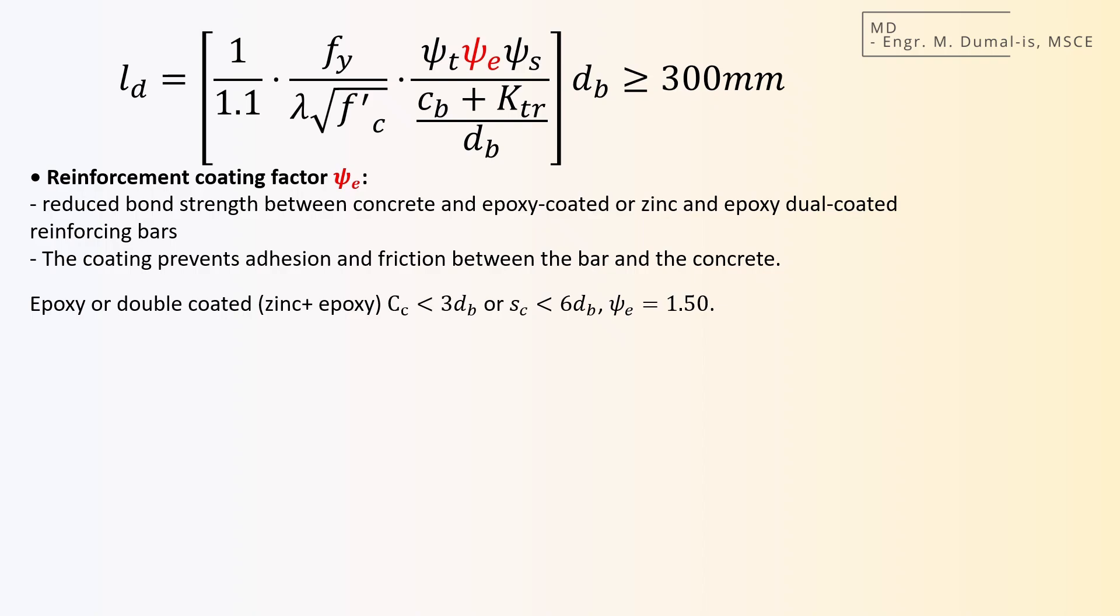splitting failure can occur, and the anchorage or bond strength is substantially reduced. Thus, in these situations, the factor is 1.5. On the other hand, if the cover or clear spacing is greater than these limits, splitting failure is avoided and the factor may be taken as 1.2. This accounts for the reduced bond strength due to the coating. For uncoated and zinc coated galvanized bars, the factor is 1.